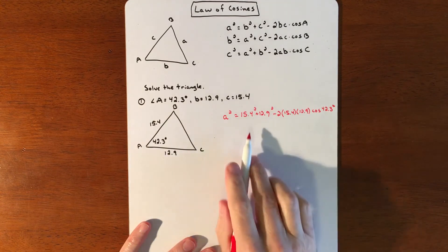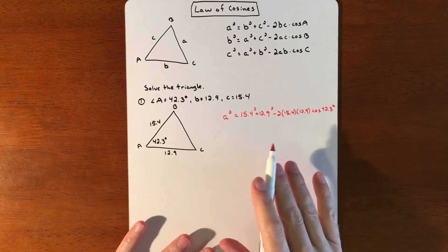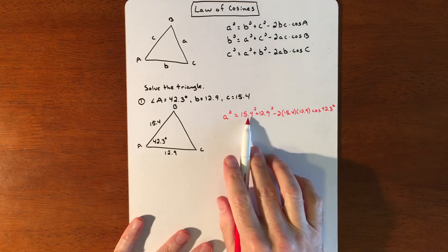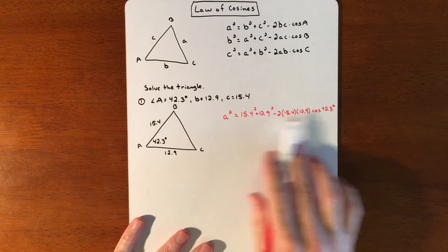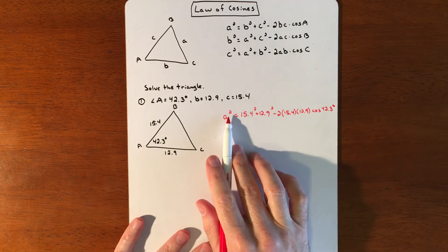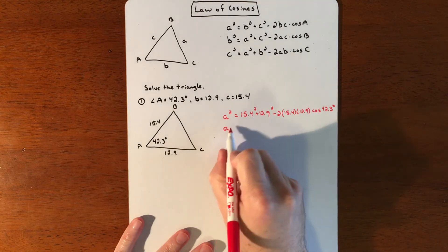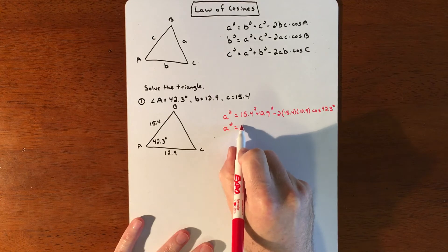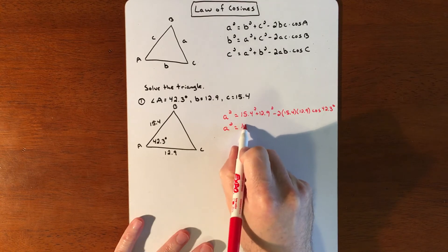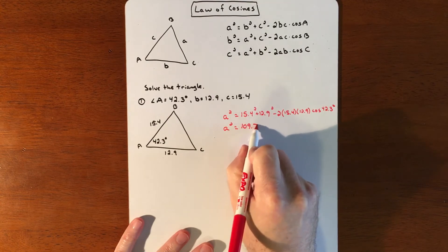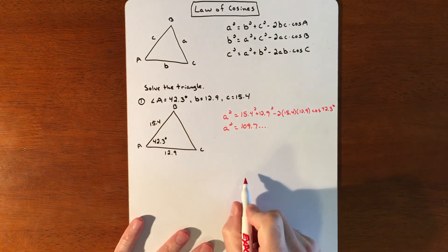Alright, so good news. This is actually your best situation whether you're using Law of Sines, Law of Cosines, or anything. If you have this, you're just going to plug all this into the calculator and then square root it. So if we put all this into the calculator, a squared is going to equal roughly 109.7 with a whole bunch of stuff after that.